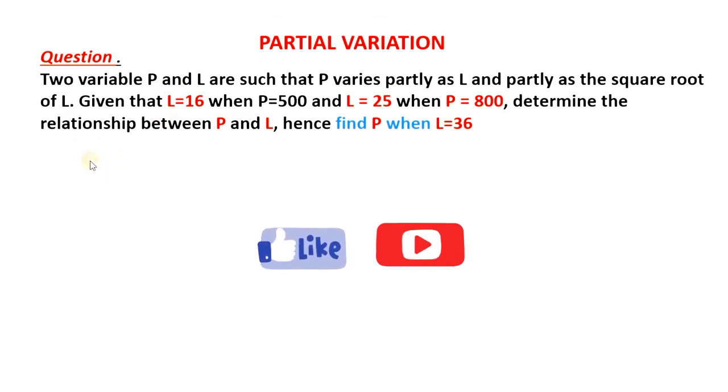So the first thing, we are told that P and L are such that P varies as L and also as the square root of L. So we'll have that information here. P varies as L and P varies as the square root of L. This symbol here is read as varies as.